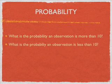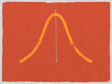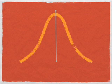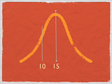So we can ask the question: What is the probability an observation is more than 10, and what is the probability an observation is less than 10? So we draw a bell curve, put the mean right in the middle, which is 15. The value of 10 is to the left of 15, of course. The Z-score at 15 is 0, and the Z-score of 10 is negative 1.